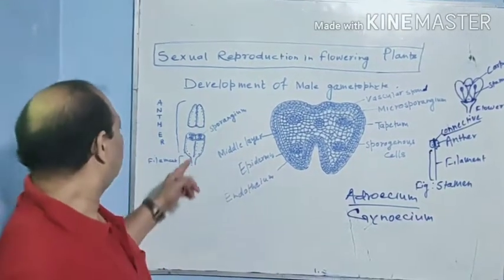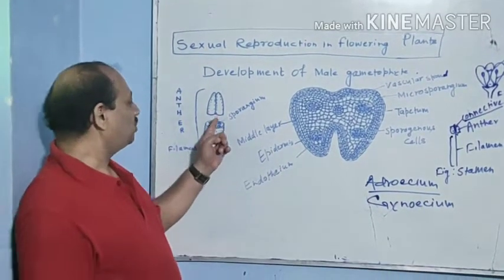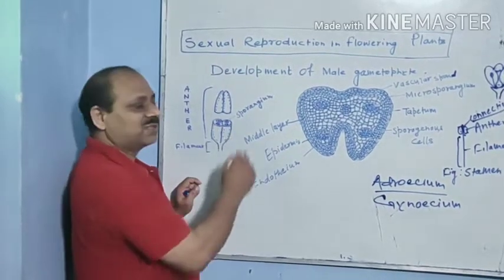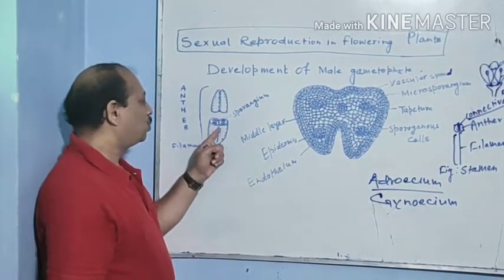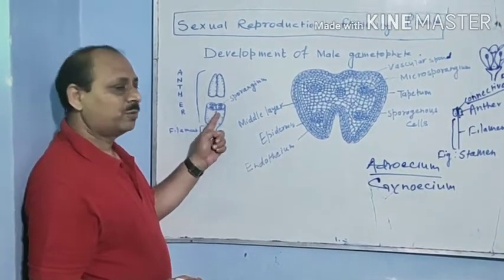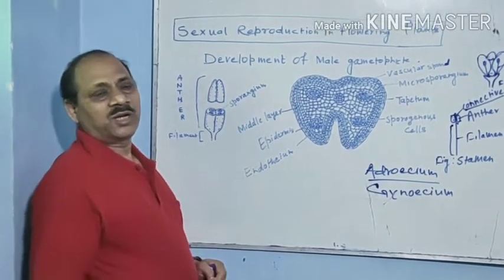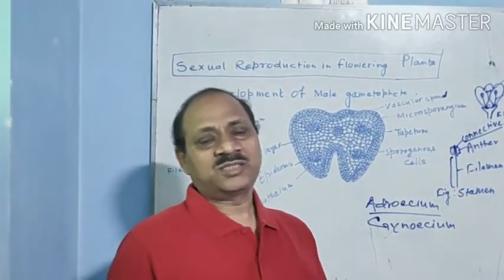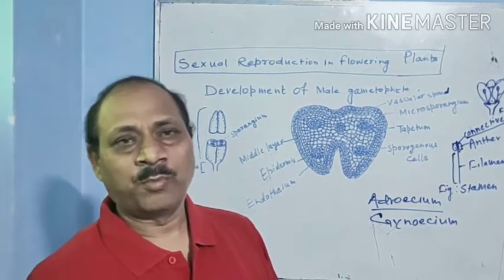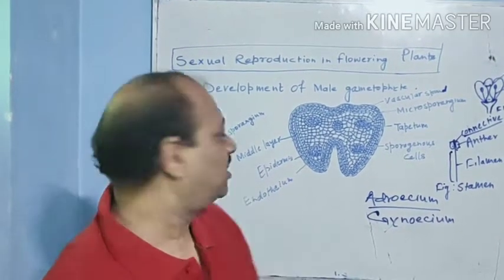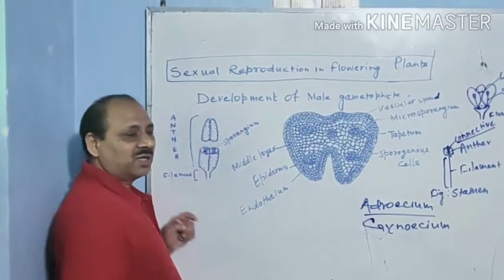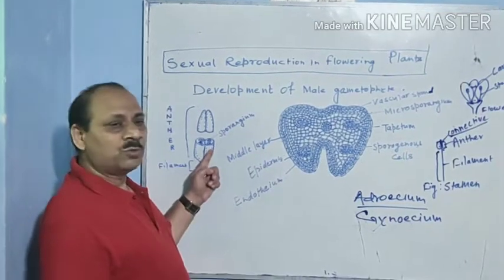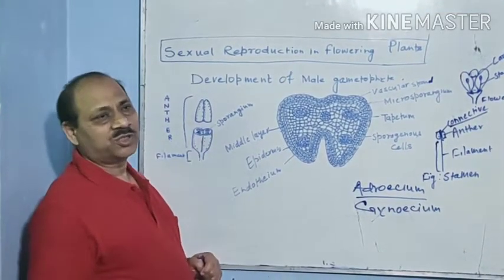The anther has two chambers. As you can see in the diagram, when it is cut, you can see two lobes — first lobe, second lobe. Each lobe contains two circular longitudinal sac-like structures. Each lobe contains two microsporangia, so two lobes together contain four microsporangia.